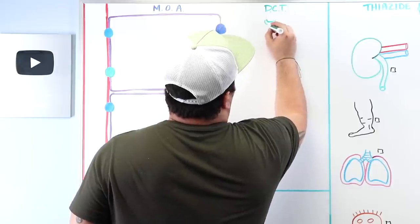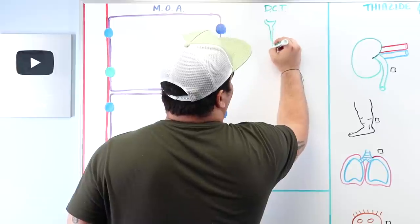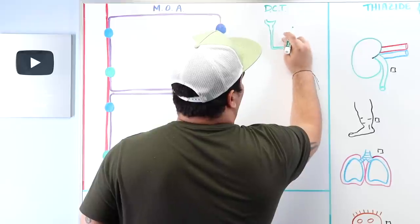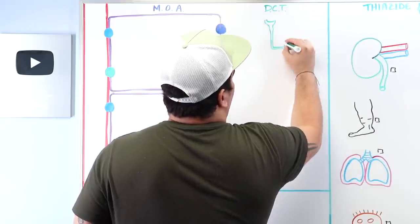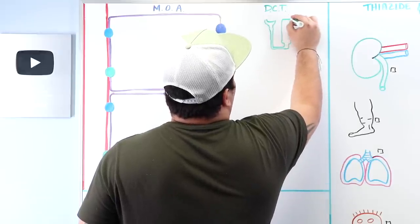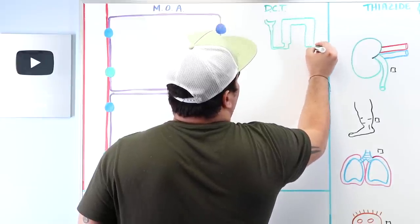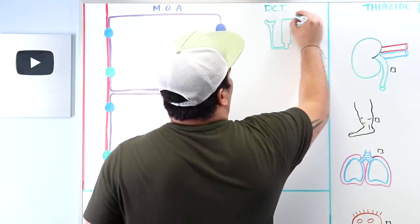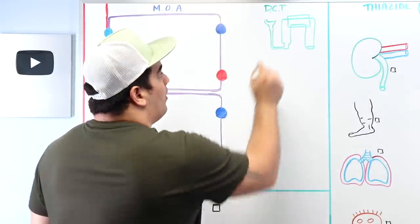Here's the nephron: Bowman's capsule, proximal convoluted tubule, thin descending limb of the loop of Henle, then the hairpin turn, up through the ascending limb — which has a thin portion and a thick portion — then around the cortex at the distal convoluted tubule, and back down into the collecting duct. We're focusing primarily on the distal convoluted tubule.